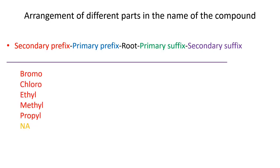All the substituents attached to the parent chain are called secondary prefixes. These may include bromo, chloro, ethyl, methyl, propyl, or it may not be there in an organic compound. The second part of an organic compound is called primary prefix. Some compounds can be in ring form, so for those compounds the primary prefix is added.